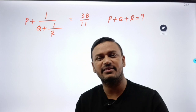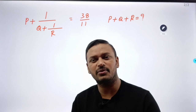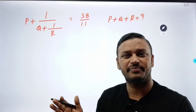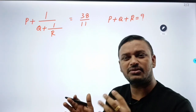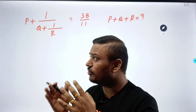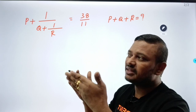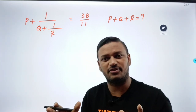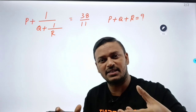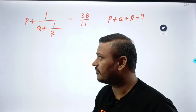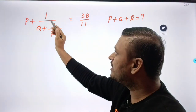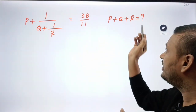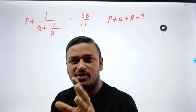This is a small question. We do the technique. 1/P + 1/Q + 1/R = 38/11. Find out P plus Q plus R.